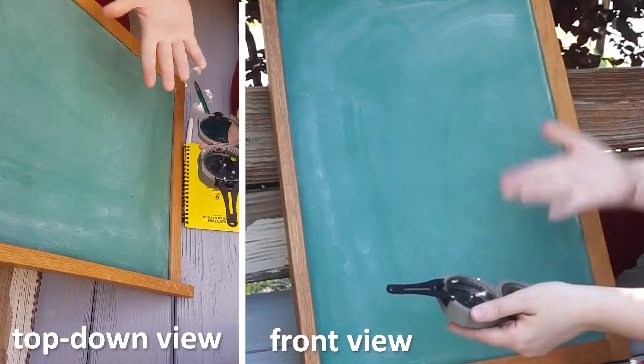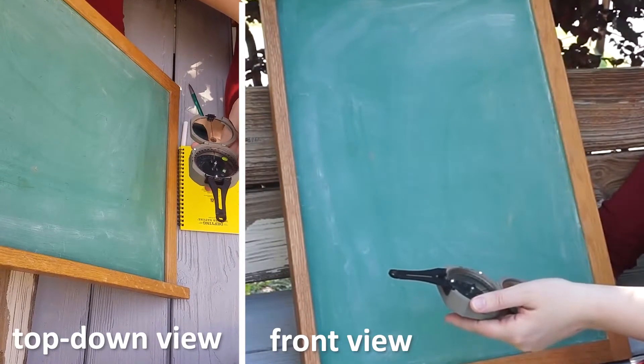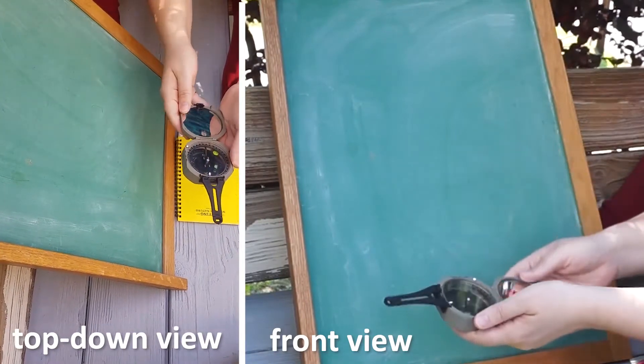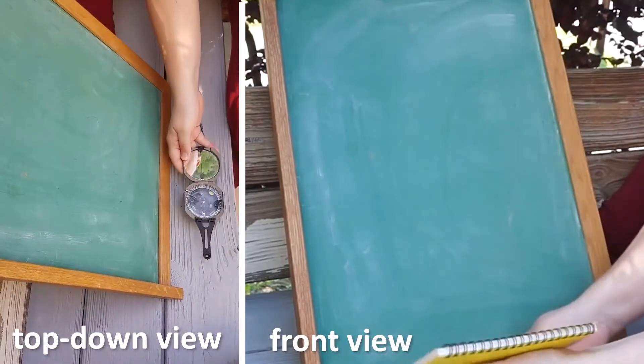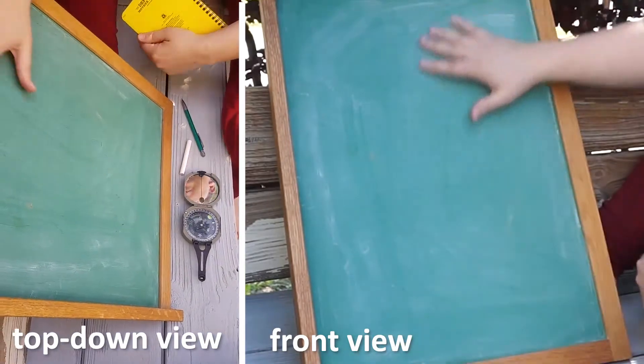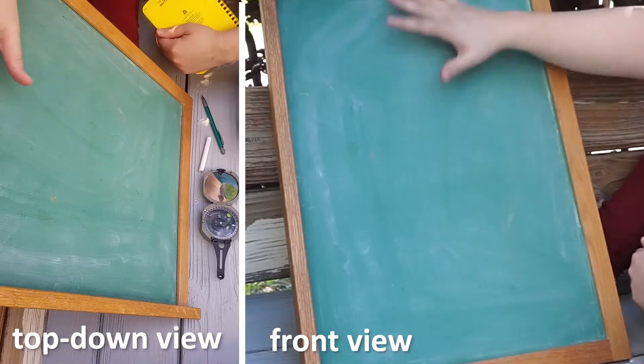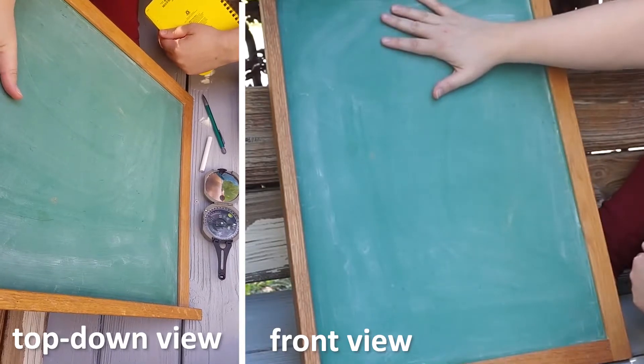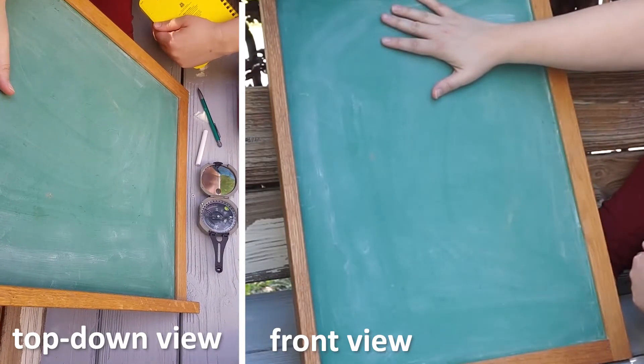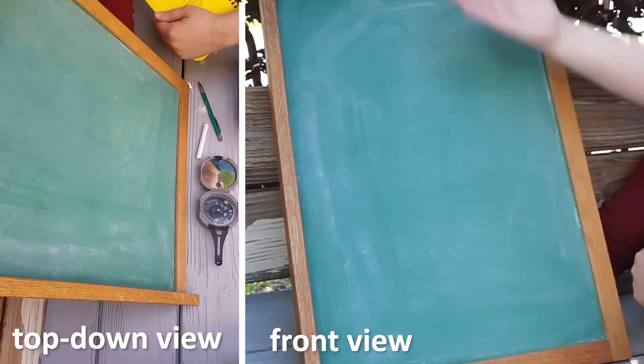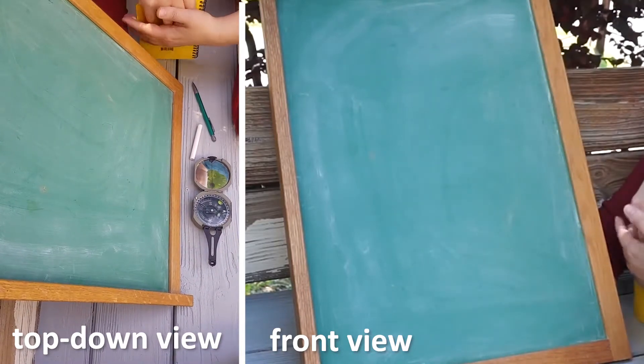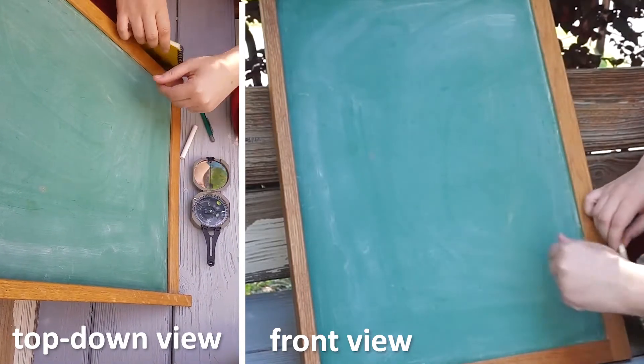Alright, so you reviewed the parts of the Brunton from my first video. Now we're going to talk about how to use the Brunton. We're using this chalkboard as our 3D surface. It's a flat surface and it's got a tilt - it's not horizontal, it's not vertical, it's at an angle. So we will use strike and dip to measure the angle and orientation of this surface.